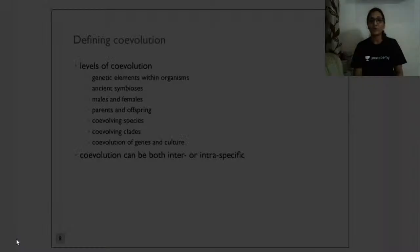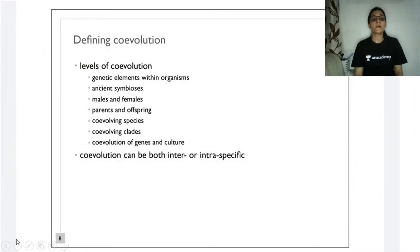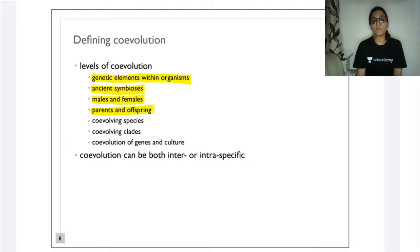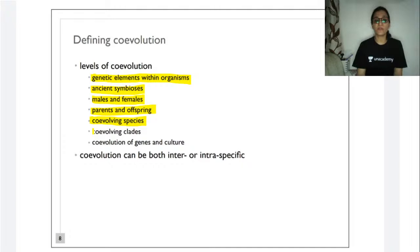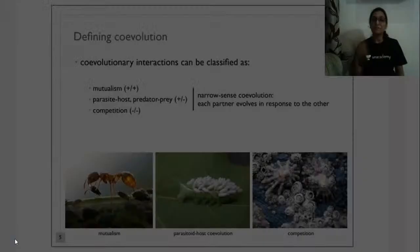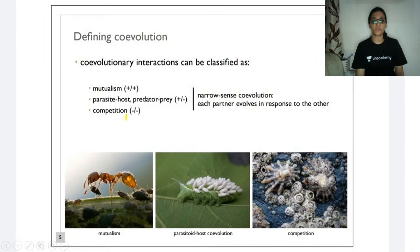Levels of co-evolution include: genetic elements within organisms, ancient symbiosis, males and females, parents and offspring, co-evolving species, co-evolving clades, and co-evolution of genes and culture. Co-evolution can be intra- or inter-specific. Co-evolutionary interactions are classified as mutualism — where both benefit, as in an ant cleaning a plant stem and receiving food — parasite-host co-evolution where the parasite evolves alongside the host, or competition.